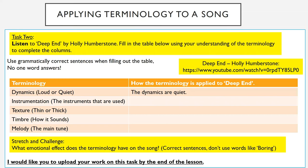The terminology we're looking into is dynamics, instrumentation, texture, timbre, and melody. For each of those terminologies on the table, I would like you to write how the terminology is applied to Deep End. For example, for dynamics — loud or quiet — I've written 'the dynamics are quiet,' showing how the terminology has been applied. I'd like you to do that for instrumentation, texture, timbre, and melody. Finally, if you find that easy, stretch and challenge: I would like you to think about what emotional effect the terminology has on the song and write your answer down. Please use correct sentences, and please don't use words like 'boring' — we're looking for the emotion of the song, not how you feel about it.